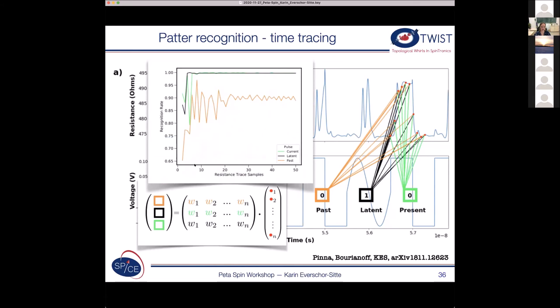And these are the results. So as a function of resistance trace sample, of course, if I take only one trace sample, then I probably won't be able to recognize it. But with, I don't know, 10, I will actually have a pretty high recognition rate of the current, the latent, and also the past pulse.